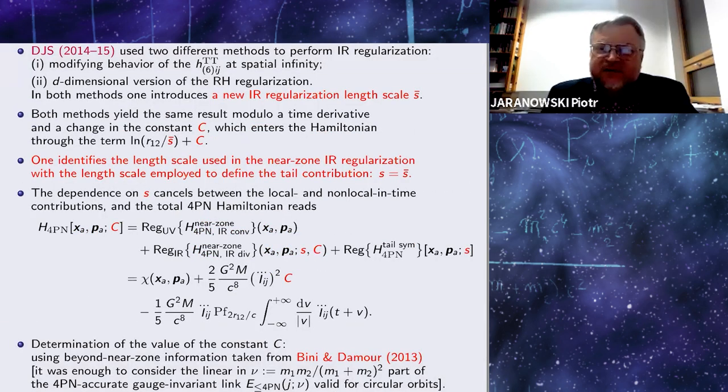Situation is different with infrared regularization because we used the tail Hamiltonian in already regularized three-dimensional form. So we had to devise some new methods to regularize infrared near-zone divergences. In fact, we used two methods. We had to introduce a new regularization length scale S-bar. Both methods yielded the same result, modulo total time derivative and a change in the constant C, which entered the Hamiltonian in a very specific way. An additive change in the constant C is equivalent to the multiplicative rescaling of the scale S-bar.